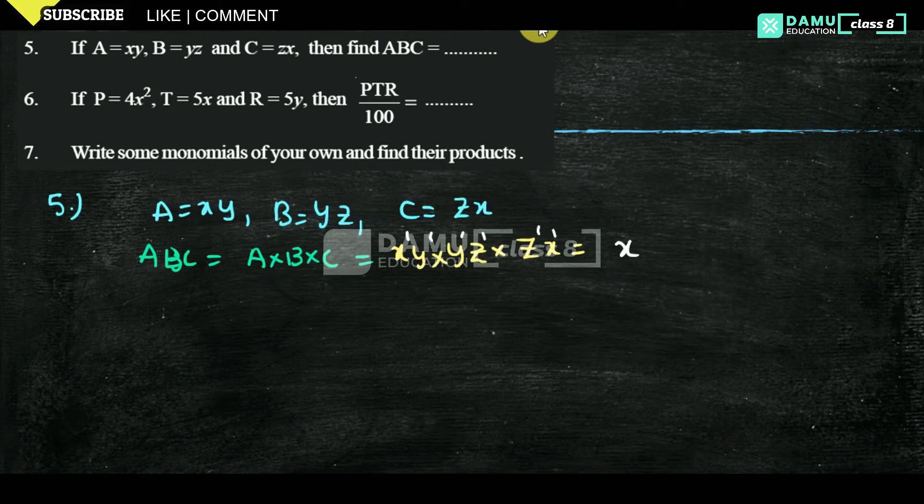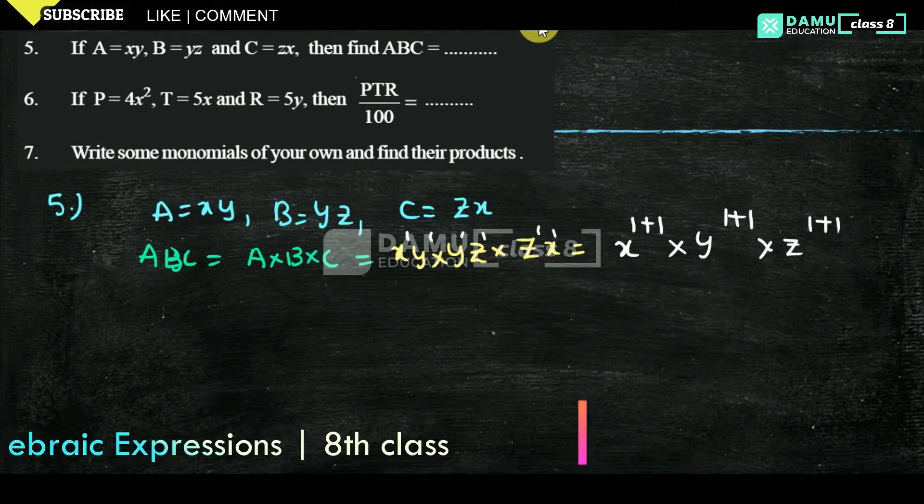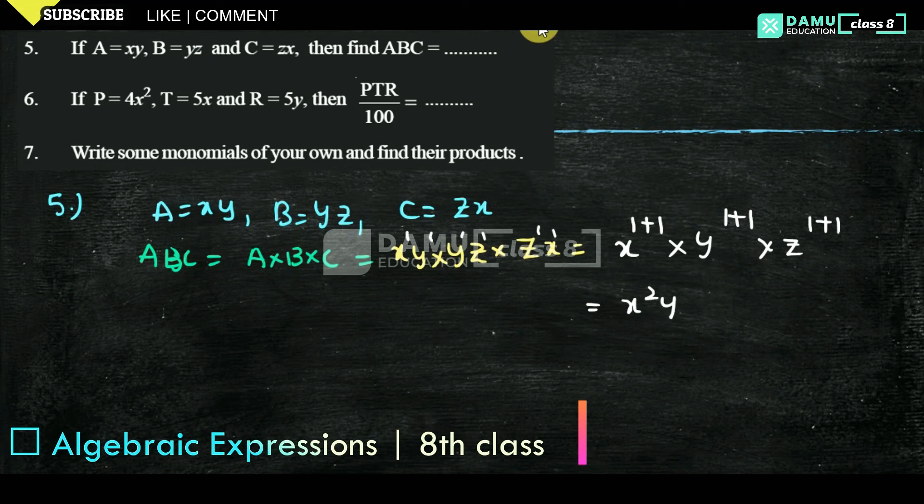First write x—how many times does it get repeated? 1 plus 1. Then y—how many times? 1 plus 1. Then z—how many times? 1 plus 1. So x squared, y squared, then z squared. So this is the answer.